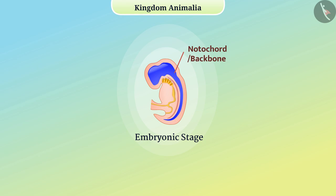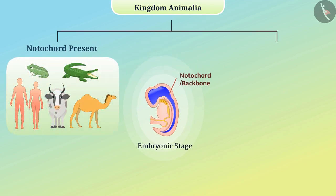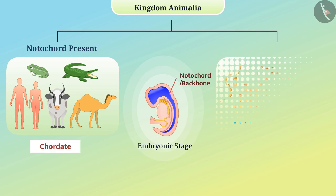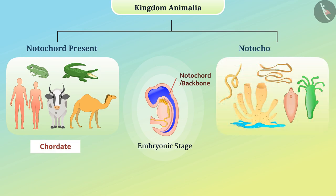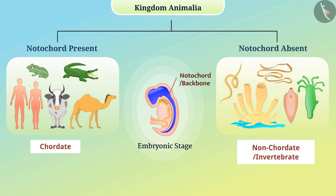Animals whose notochord is present in the embryonic stage are called chordates, whereas in other animals the notochord is not present — they are called non-chordates or invertebrates. Let's explore the subclasses of Invertebrata in this video.